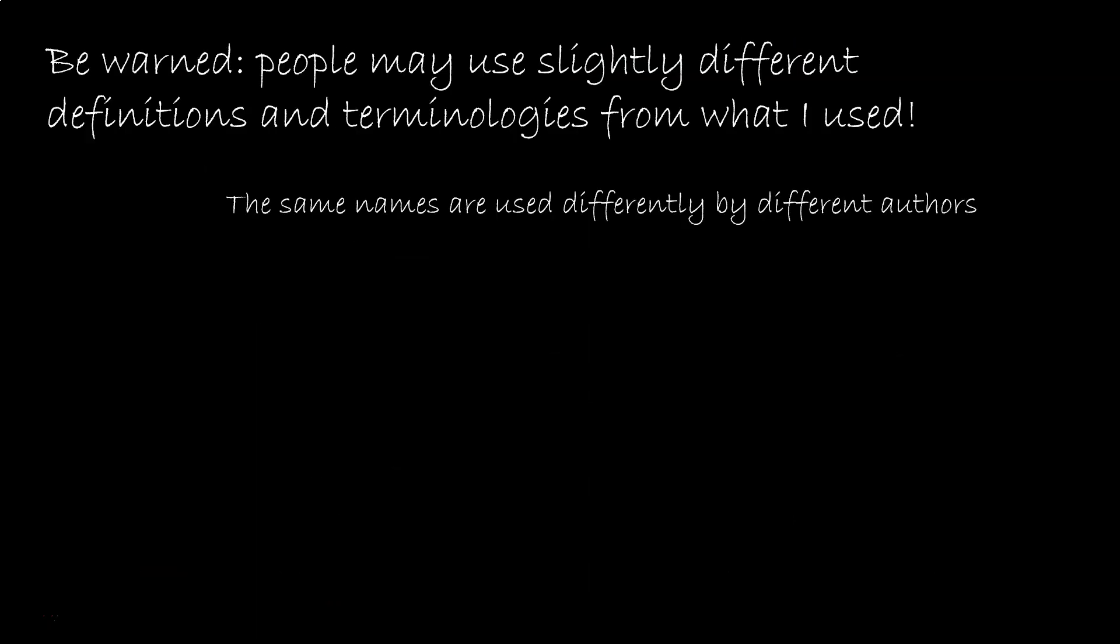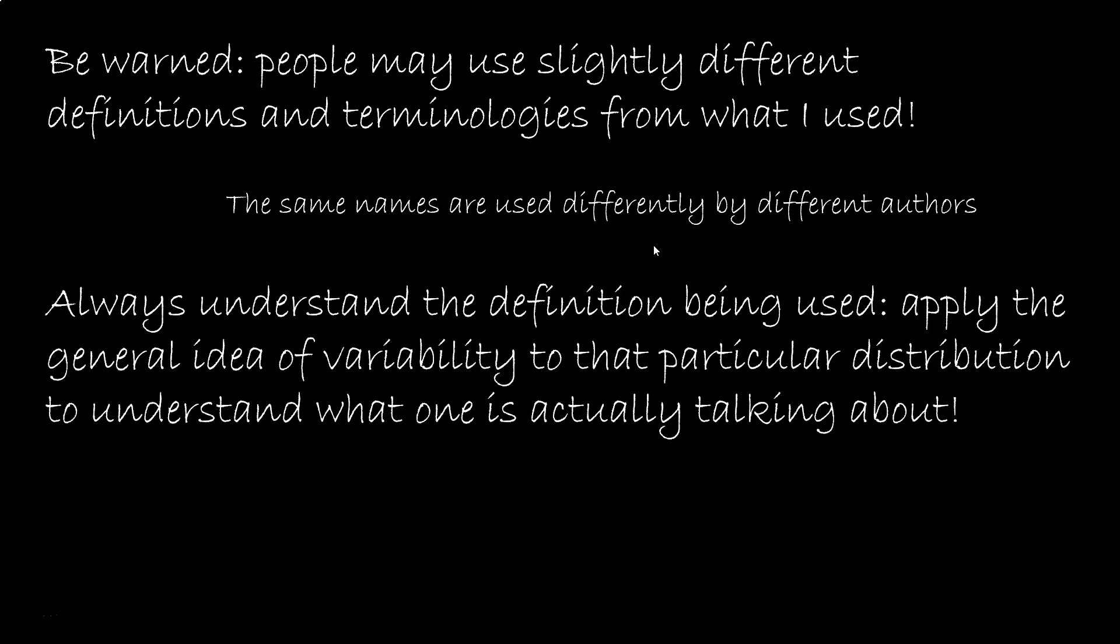Yet another source of confusion is that, especially in research papers, people define distributions and entropy in different ways, so the same names are used differently by different authors. So I encourage you to always go back to the definition being used and see what they mean. Look at their distribution, what does it represent, do they have a clear definition. Then you can apply the general idea of variability, which we saw always works, to that particular case, and therefore understand what exactly they are talking about. A clear understanding of a problem is 90% of the solution.